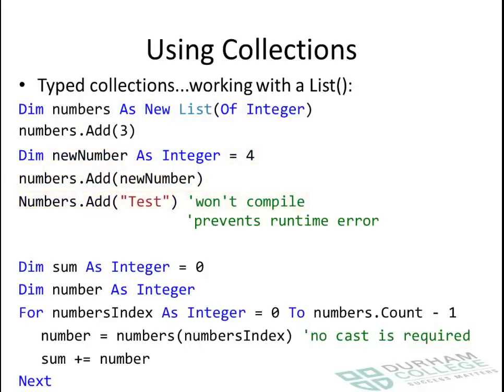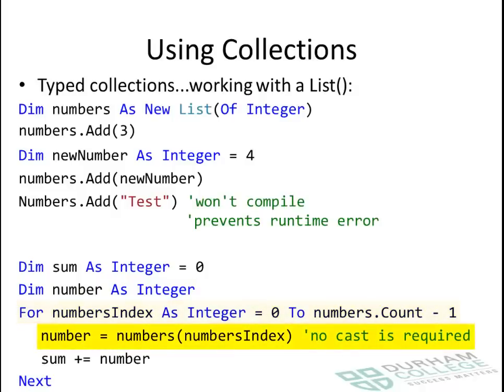In the bottom example, you can see that because it's typed, there's no casting required. For example, a number is declared as an integer, and if it's going to count things in a list, you can assign a value to the variable number from the numbers list because the numbers list itself contains integer values.